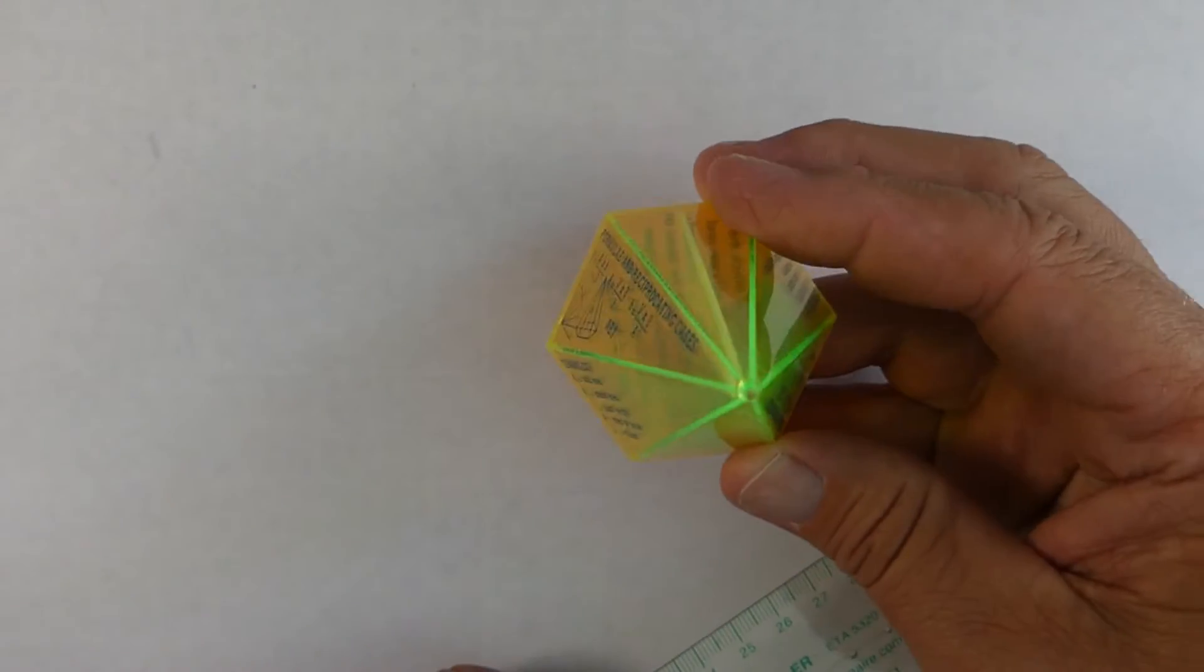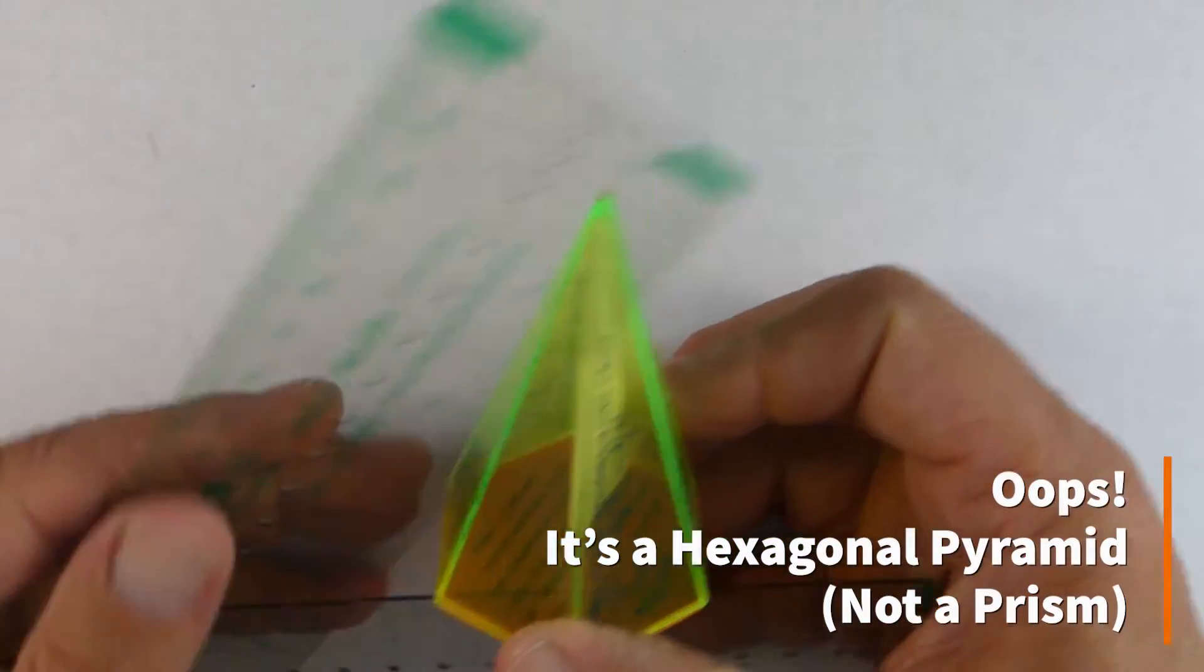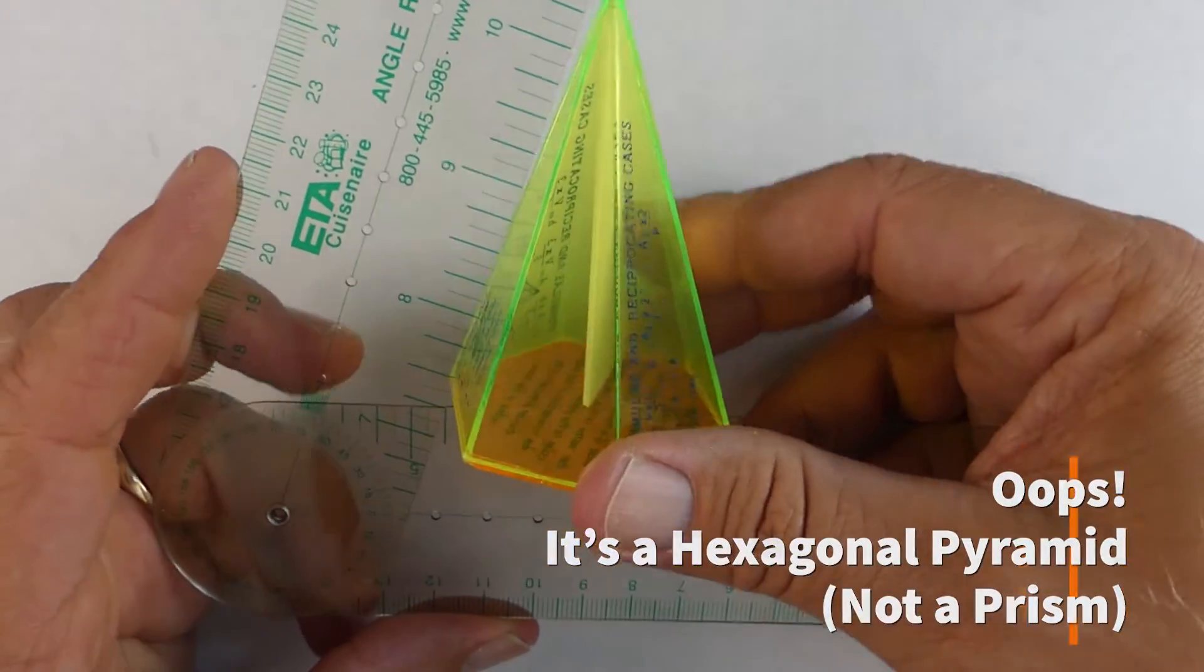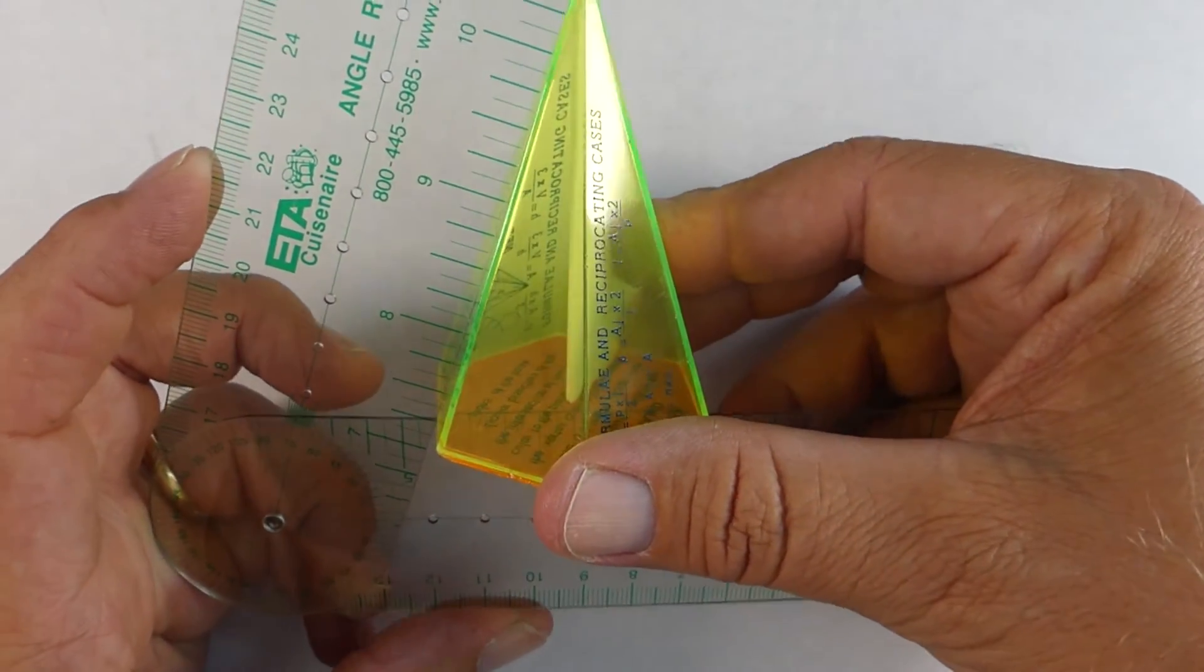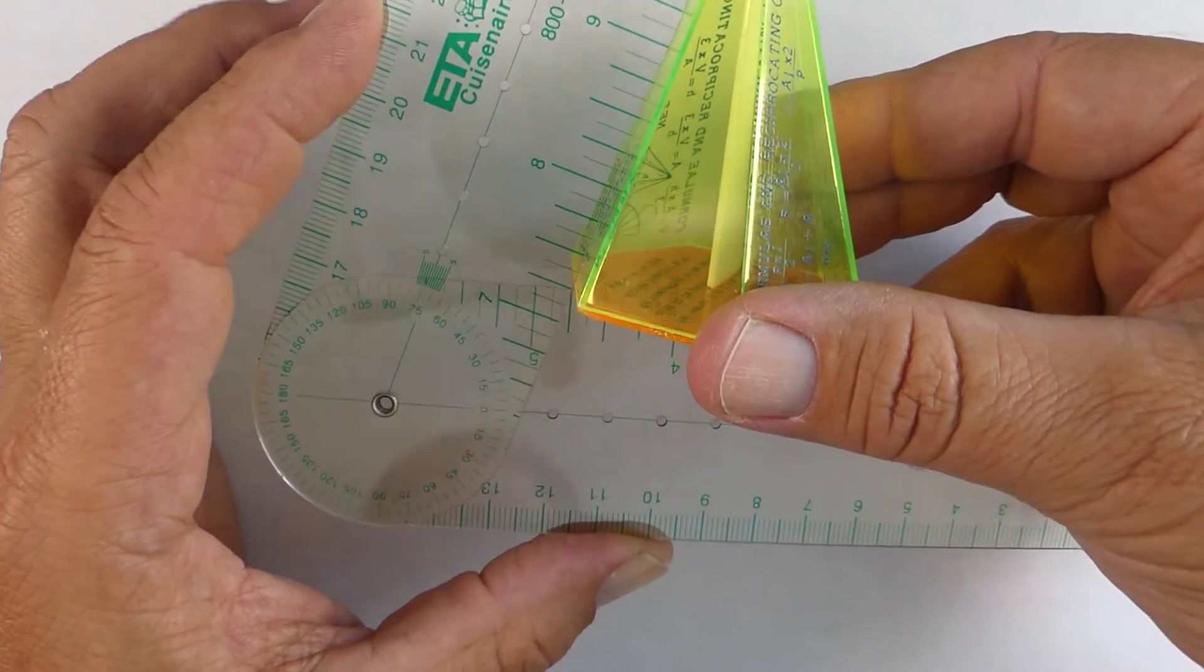But the same thing works if you're using, say, three-dimensional objects. So on this one right here, we have a hexagonal prism, and let's say we want to find out how many degrees the slant height would be. So again, you just take your angle ruler, kind of fit it to that, and you can see it's about 75 degrees.